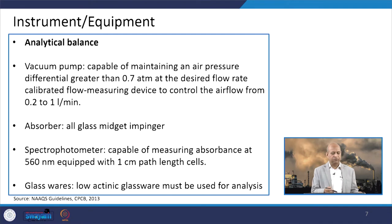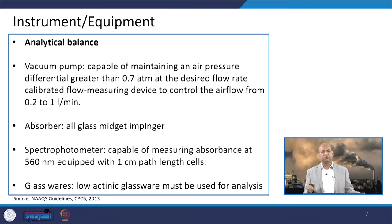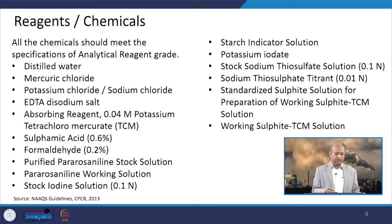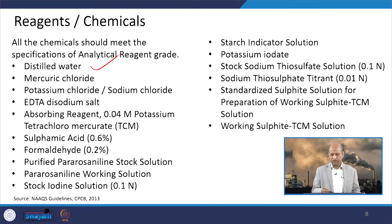For instruments and equipment, we need an analytical balance, then a vacuum pump for extraction of gases which are passed through the chemical in the impinger where they get absorbed. A spectrophotometer is used for measuring absorbance in a colorimetric procedure, and glassware is needed for forming solutions. The reagents and chemicals needed include distilled water, mercury chloride, potassium chloride — you can see the whole list — all of which are needed in the laboratory for this particular analysis.